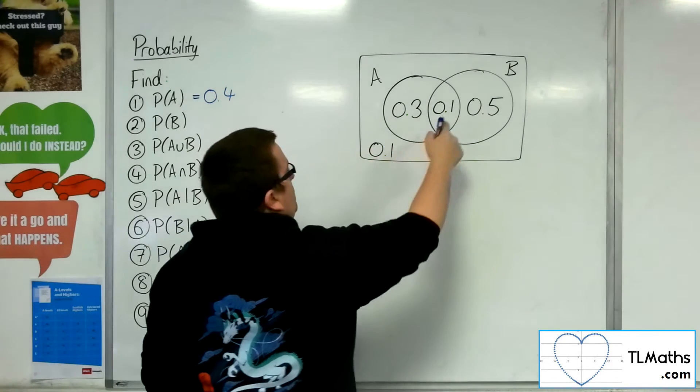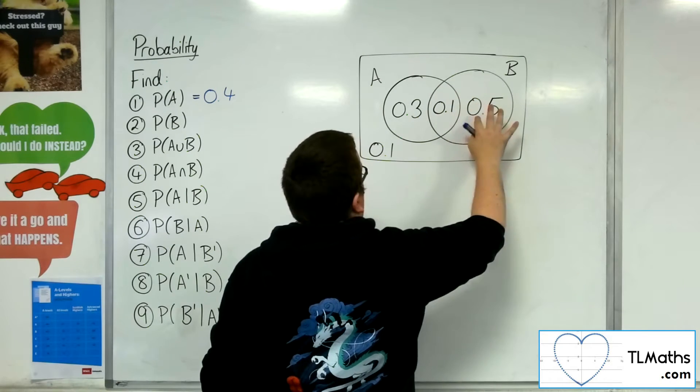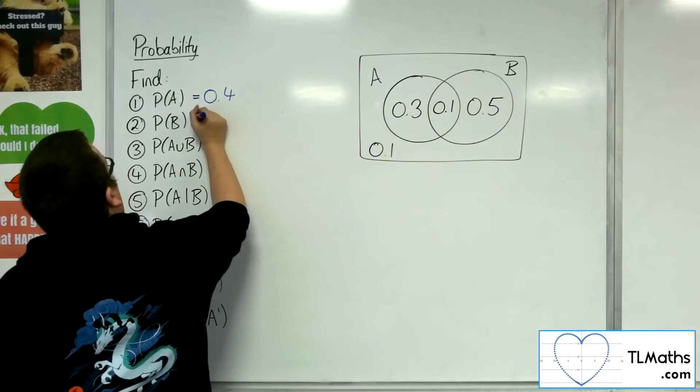The probability of B is anything that's within the circle of B, so 0.1 and 0.5 is 0.6.